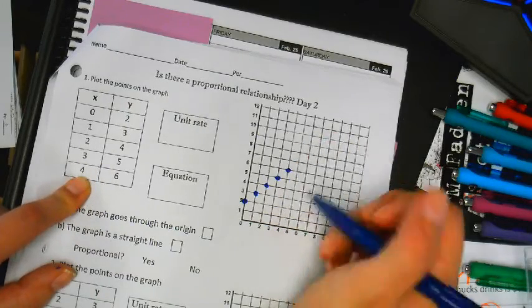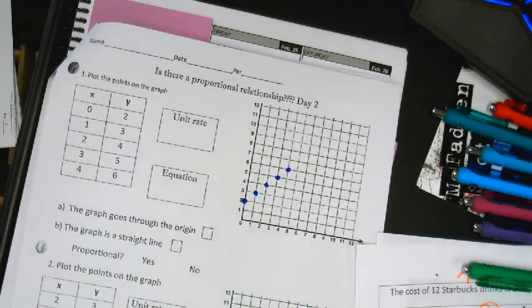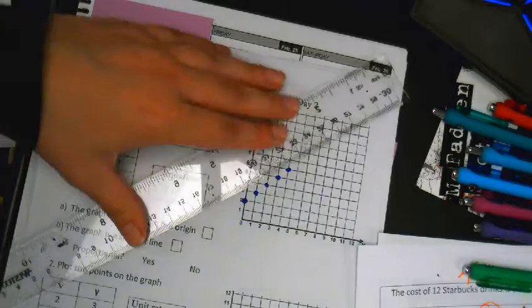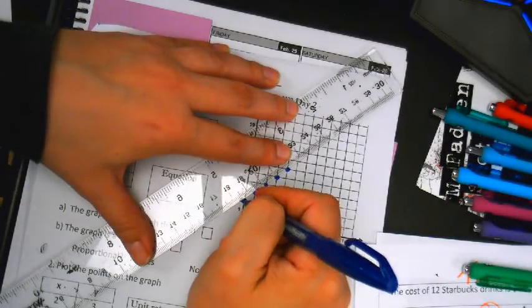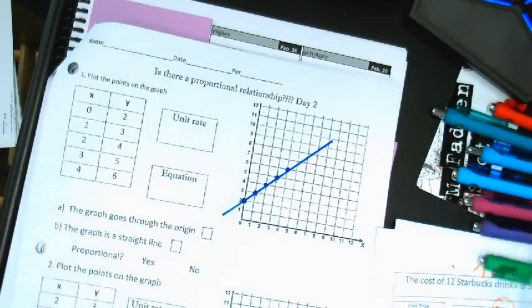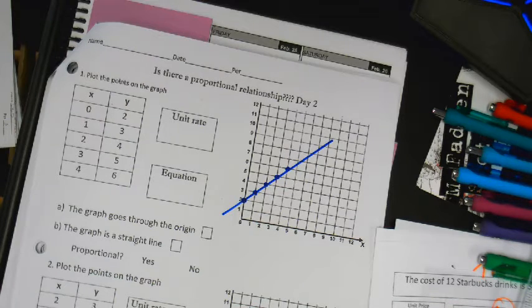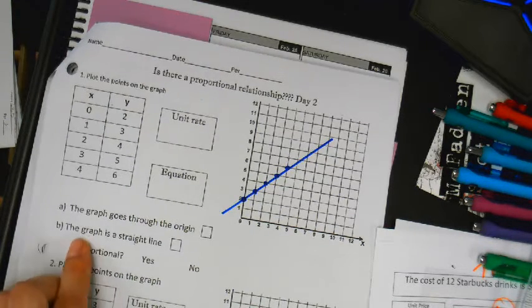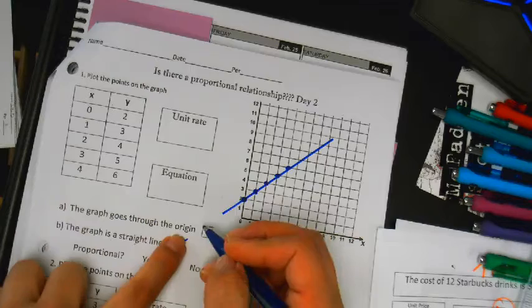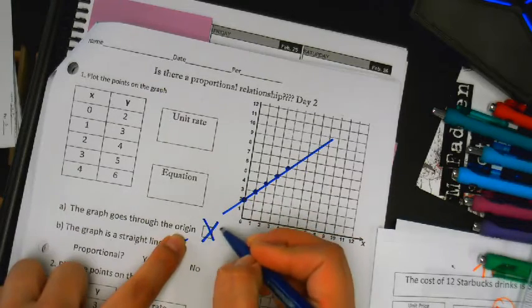So, it's a straight line, right? It is a straight line, right? Once you graph it, it is definitely a straight line, but it doesn't go through the origin. You can clearly see, does it go through 0, 0? No. No. So, here, is the graph a straight line? Yes. But does it go through the origin? No.